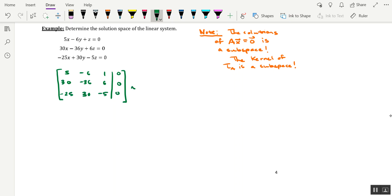And what we're going to do is RREF that, and I'll provide that for you. The first row is 1, negative 6 fifths, 1 fifth, and then 0. And then rows 2 and 3 consist entirely of 0s.